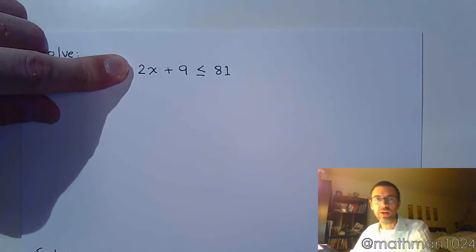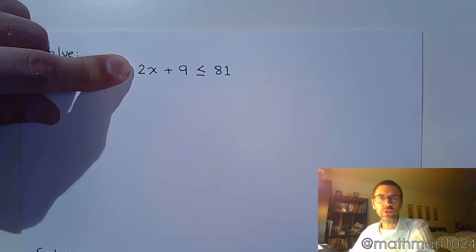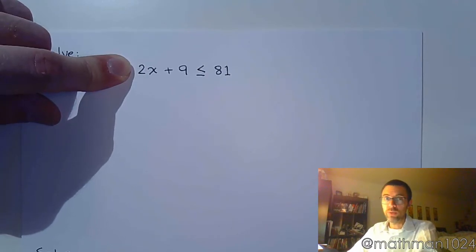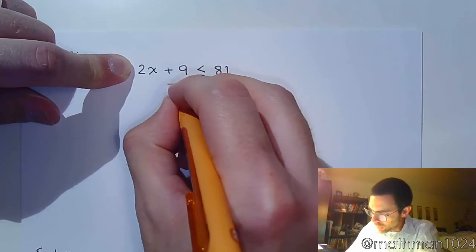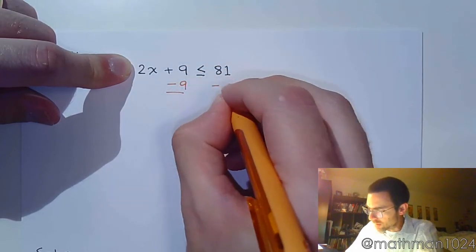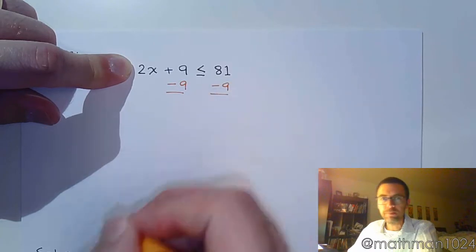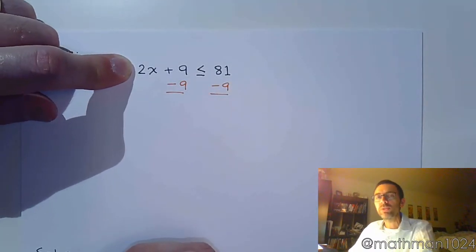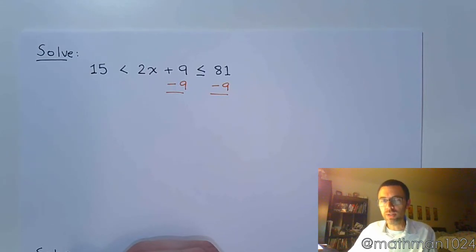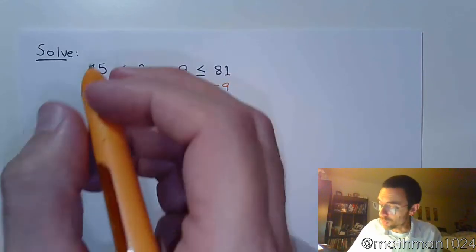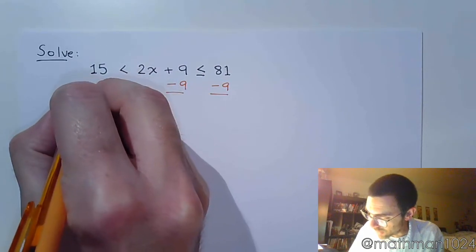If I just gave you this inequality right here and asked you to solve 2x plus 9 is less than or equal to 81, well, the first thing that you would do would be subtract 9 on both sides, right? No big deal. But since you have a three-part inequality, what you do to one part of the inequality, you have to do to all three parts, which means I need to also subtract 9 over here.